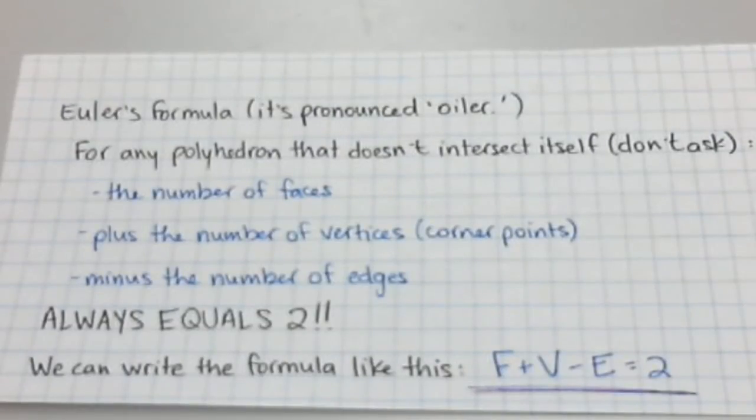Hey folks, welcome to another edition of Mr. D teaches math. Today we're going to talk about something called Euler's formula. Euler was a mathematician who started thinking about and looking at prisms and pyramids, and started thinking about how the number of faces, vertices, and edges are related.